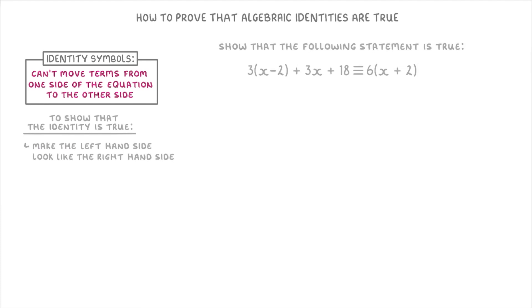In general, the best way to do this is to simplify the left hand side first by getting rid of any brackets and collecting like terms, and then seeing what we need to do to make it look like the right side.